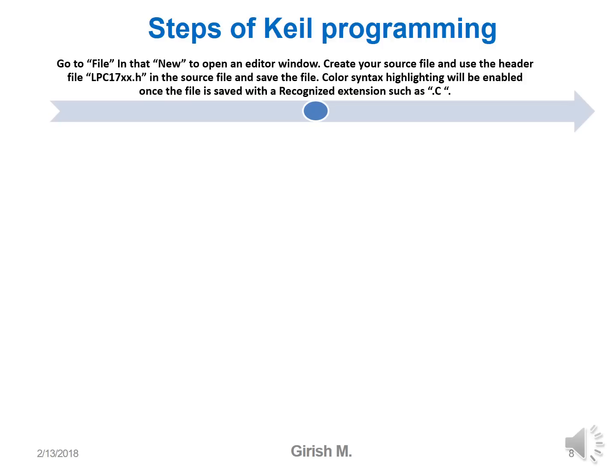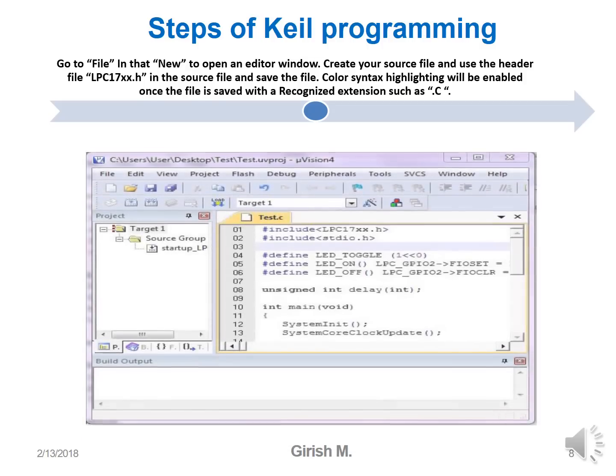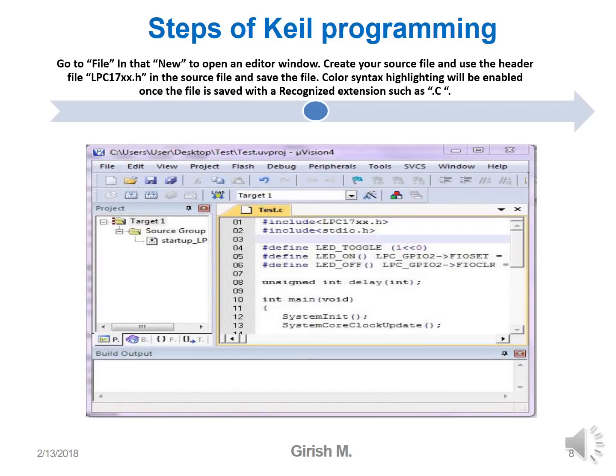Save the source file with a .c extension; this enables color syntax highlighting which makes it very convenient to spot errors. This is the editor window where you type your program, and then save it with the .c extension.